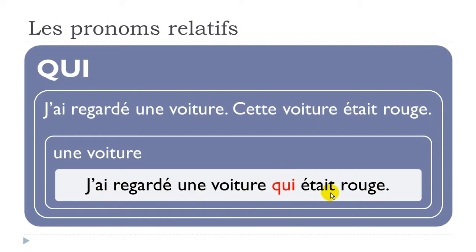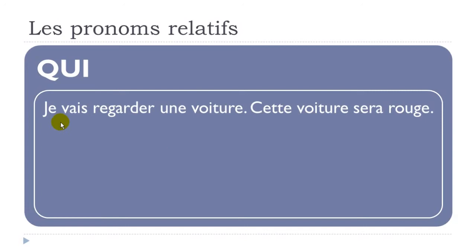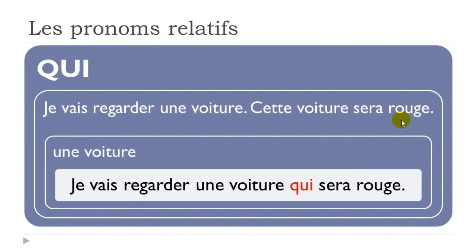At the future: 'je vais regarder une voiture' and 'cette voiture sera rouge' — futur simple — becomes: 'je vais regarder une voiture qui sera rouge'. To summarize: spot the word you want to replace, and if it is the subject — whether a person or a thing — use 'qui', placed before the verb.